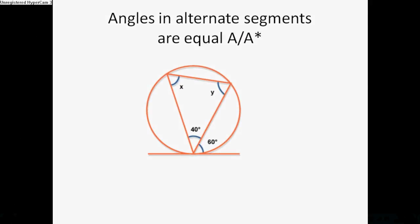Angles in the alternate segments are equal. A star. This is the only circle theorem that is at A star. And you don't actually have to learn this one because you can use other circle theorems to work it out.